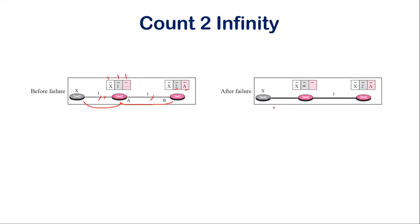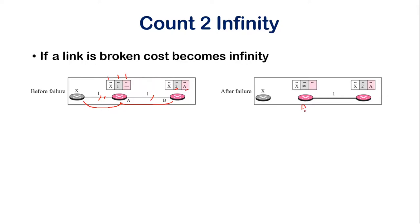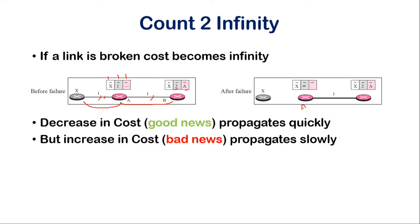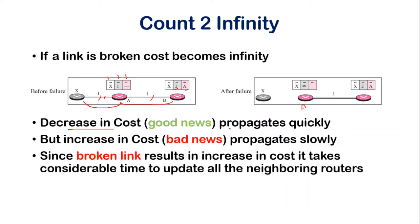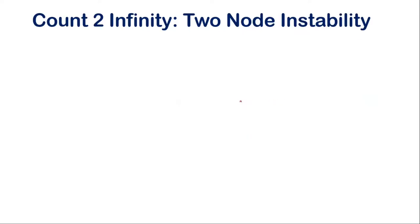Now, if for some reason the link between node X and node A is broken, the distance between node A and X is set as infinity. In distance vector routing, it is established that a decrease in cost propagates quickly, but an increase in cost propagates slowly. Since the broken link results in an increased cost, node A will take considerable time to update all its neighboring routers about this situation.